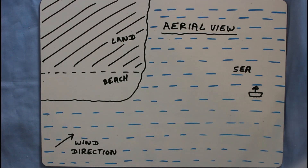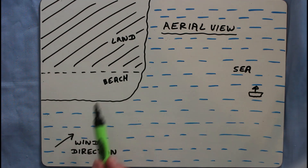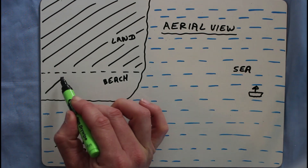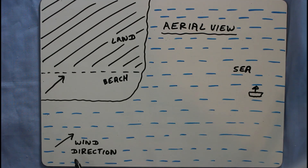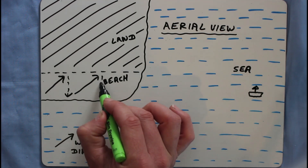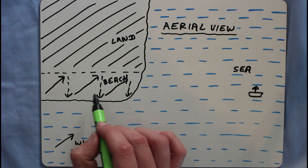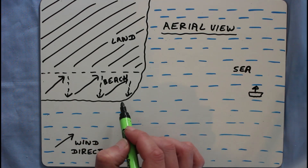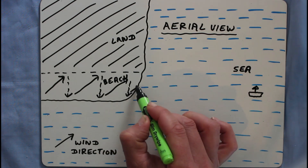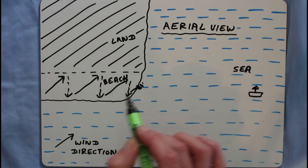Now let's see why spits form. In this picture it's an aerial — bird's eye — view looking down from above. This is the land, here is the sea, and this area is the beach next to the sea. The wind direction drives waves up the beach; the swash occurs in the same direction as the wind hitting the beach, and backwash drags material back down. Material is moved along this beach by longshore drift. A spit forms where material reaches the end of the coastline, because the swash carries rocks over the edge of the land, dropping material into the sea off the end of the beach.